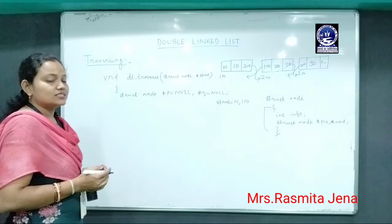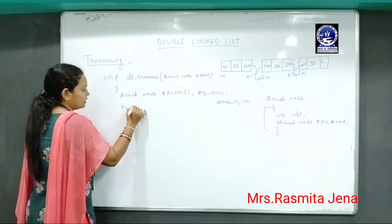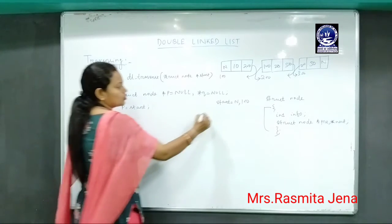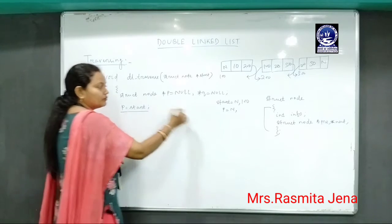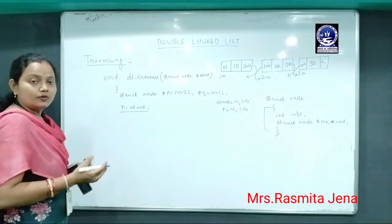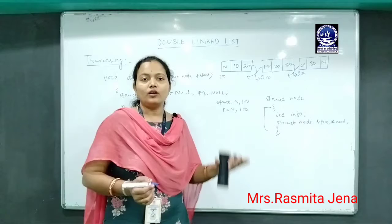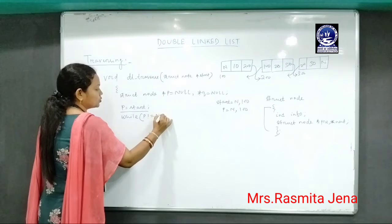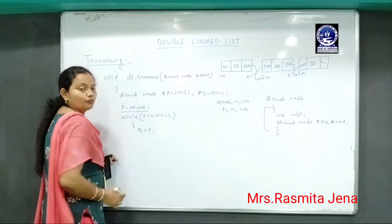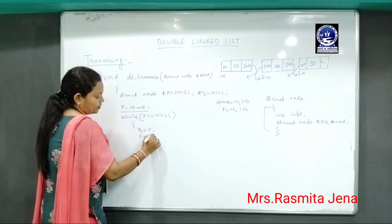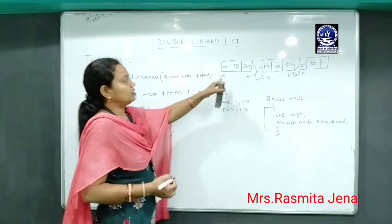We will first start traversing the double linked list in the forward direction. First, initialize p by the start pointer. Initially p is null, and when I execute the statement p equals start, p becomes 100. For forward traversal, I will define the condition: the while loop runs while p is not equal to null. Within the loop, I write q equals p, and printf with the format specifier to display the data part, that is the info part of the node.